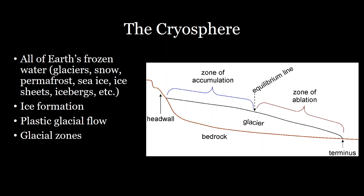That imaginary line between these two zones is called the equilibrium line, or ELA — the equilibrium line altitude. Each glacier will have a variable area of accumulation zone as well as ablation zone, and it's a good way to think about a glacier as it moves downhill.